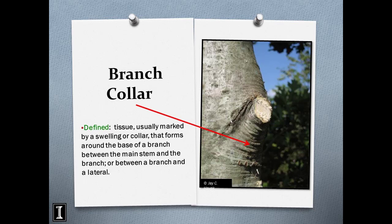Another key term is the branch collar. We want to avoid pruning too deeply into the branch collar; otherwise, the wound wood will not fully cover the wound and we can get decay. Three inches is the max for branch diameter — anything over three inches, you will start to develop decay and will not get proper wound wood development.